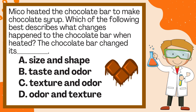Miko heated the chocolate bar to make chocolate syrup. Which of the following best describes what changes happen to the chocolate bar when heated? The chocolate bar changed its... A. Size and shape. B. Taste and odor. C. Texture and odor. D. Odor and texture. The correct answer is A. Size and shape.